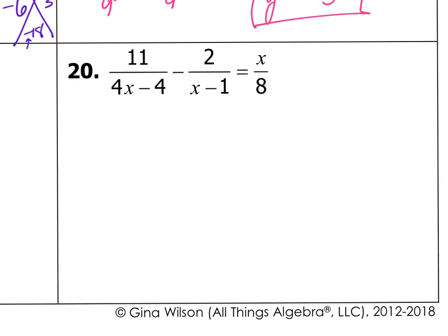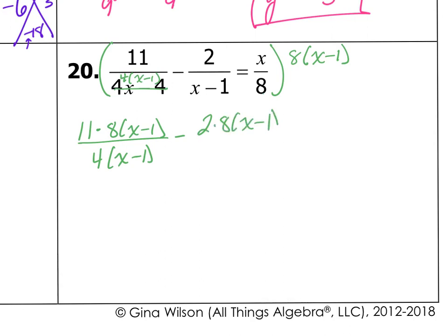And then we have our last problem here. So, again, I'm going to get rid of the denominators by multiplying by my common denominator. So in order to do that, I think I'm going to have to factor this one. So this one factors to 4 times x minus 1. So what is my common denominator? I think it's going to be 8 times x minus 1. Because 4 times 2 is 8, and then x minus 1. So I'm going to multiply that by everything. So I'm going to do 11 times 8 times x minus 1 all over 4 times x minus 1, minus 2 times 8 times x minus 1 all over x minus 1, equals x times 8 times x minus 1 all over 8.